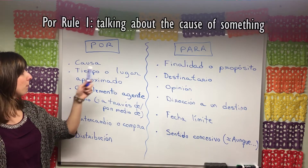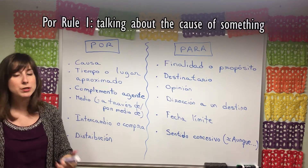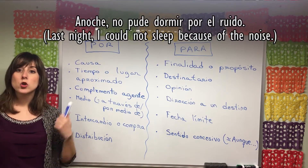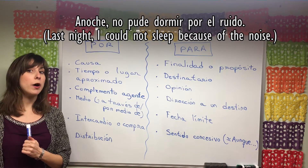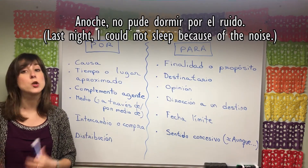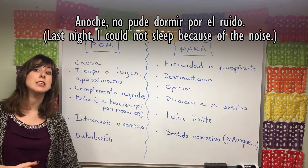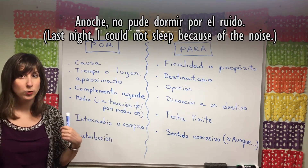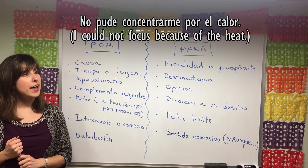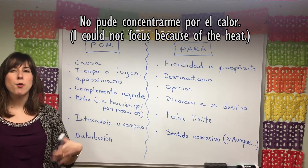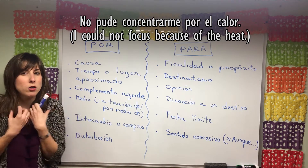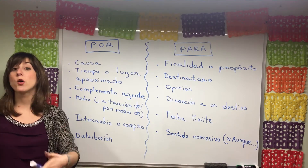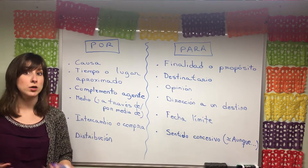The first thing we use por for is to talk about the cause of something — because of or even due to. For example: 'Anoche no pude dormir por el ruido' — last night I was not able to sleep because of the noise. That's the cause, that's the reason why you couldn't sleep. Or: 'No pude concentrarme por el calor' — I couldn't focus because of the heat. Or 'por el cansancio' — due to tiredness.